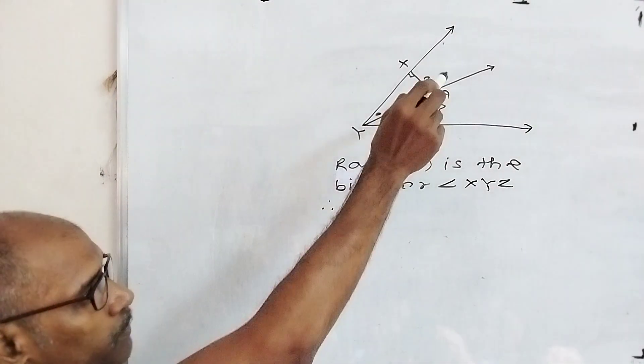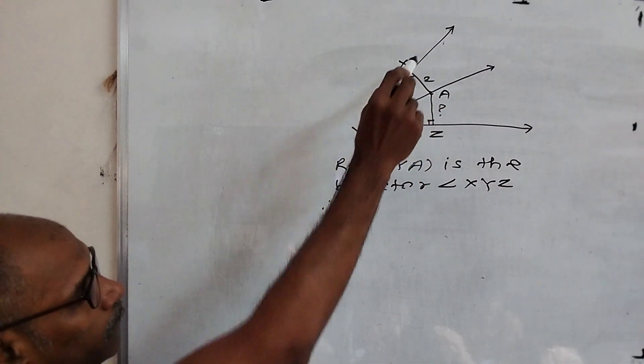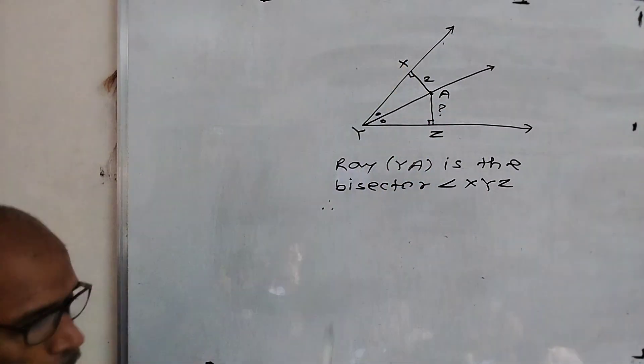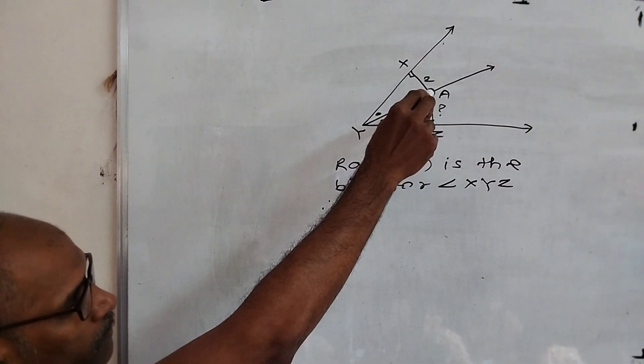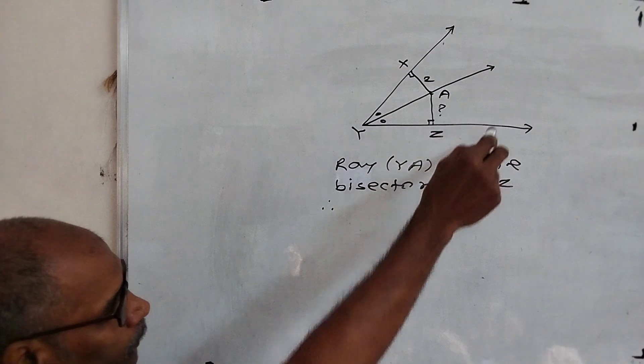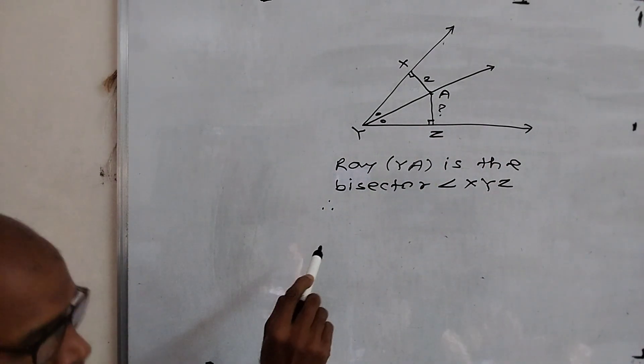This means A is on the angle bisector, and AX perpendicular to ray YX, and this segment AZ perpendicular to ray YZ. Therefore...